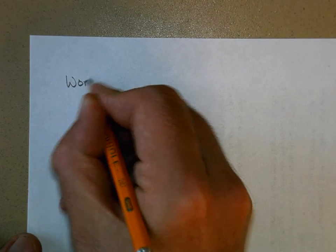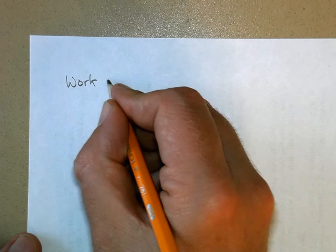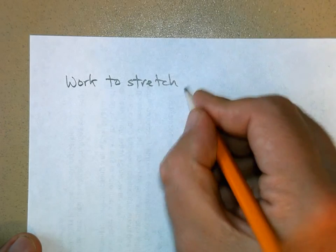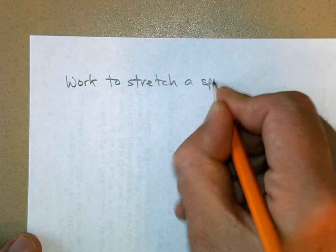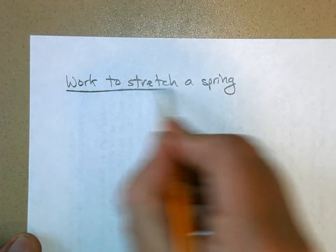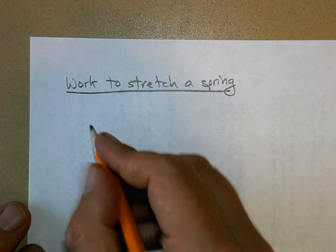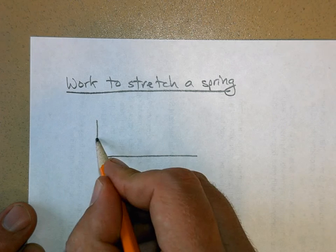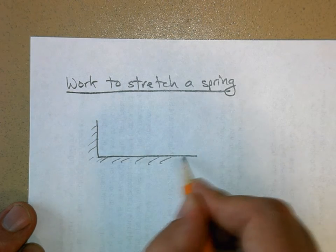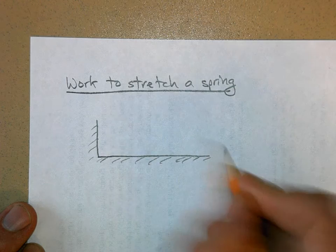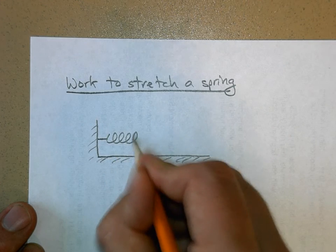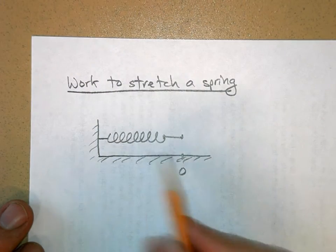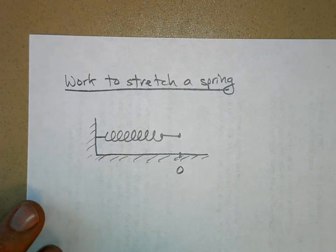Let's talk about the work it takes to stretch or compress a spring. If you have a spring, I'm going to anchor it to a fixed wall or something like this. So here's a spring, and I'll draw a picture of it like this. Let's say that when it's right here, we'll call it zero, that the spring isn't stretched at all.